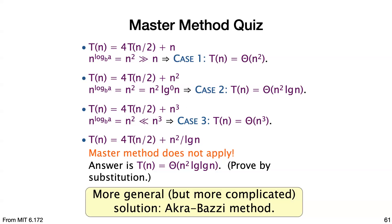A student asked why the runtime is larger if work is geometrically decreasing in case 3. The answer is that even though it's decreasing, you still have to do the n³ work at the top — everything underneath is small compared to that top-level work.